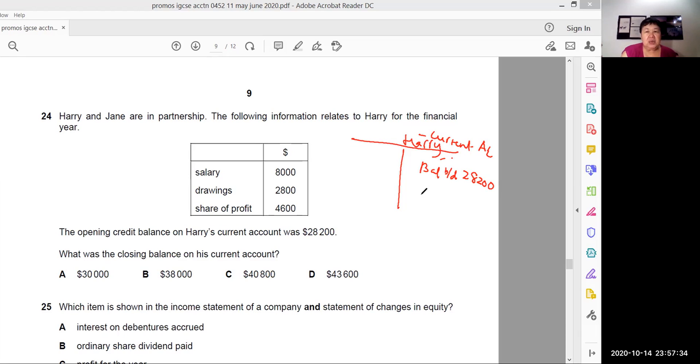Now salary. Salary would increase the amount that we owe to Harry. So we credit Harry's account and debit the appropriation account for salary. Drawings. Well we have to credit the drawings account and debit Harry's current account here. So it's $28,200. Share of profit. That would also further increase the amount that the business owes him. So it's share of profit, $4,600.